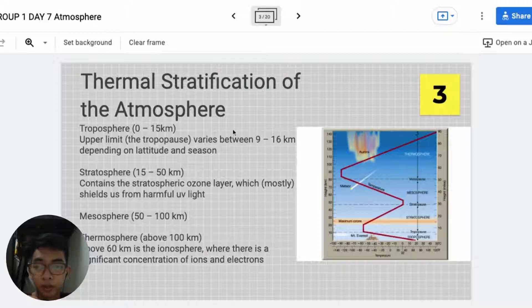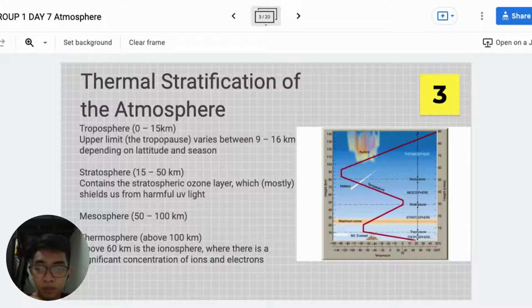Mesosphere: 50-100 km from the atmosphere. Thermosphere: Above 100 km from the atmosphere. Above 60 km is the ionosphere, where there is a significant concentration of ions and electrons.